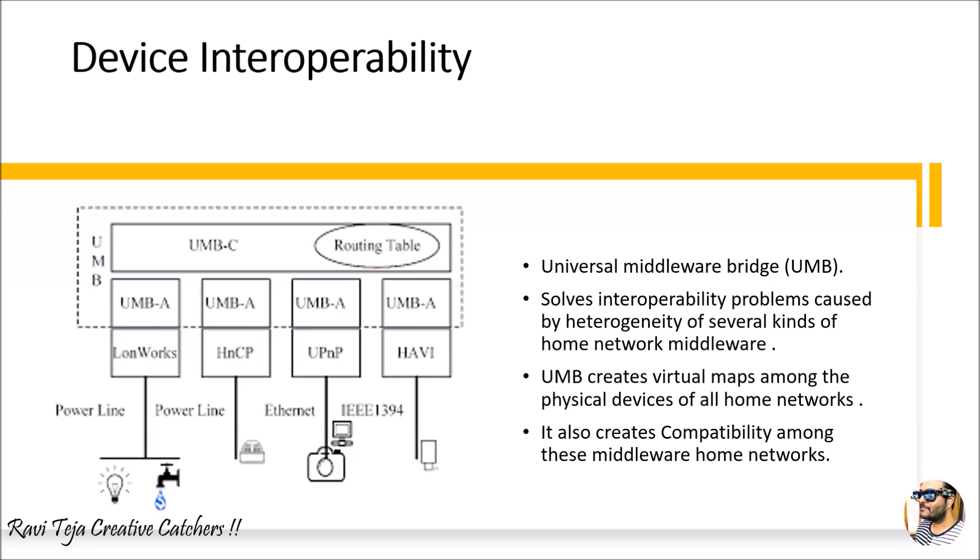The Universal Middleware Bridge solves interoperability problems caused by heterogeneity of several kinds with respect to home network middleware. It creates virtual maps along the physical devices and creates compatibility among middleware home networks. On the whole, it acts as a bridge between two different devices made with different protocols, hardware, or software interfaces, enabling both to translate and exchange data to fulfill a particular IoT application — which all comes under device interoperability.